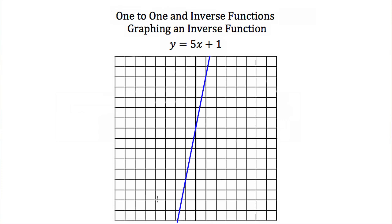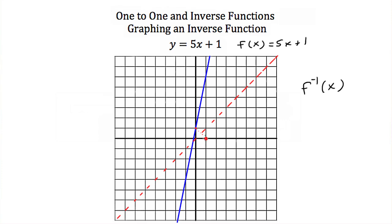If we're given the graph of a function and want to graph its inverse, the inverse can be found by reflecting the original graph across the line y = x. For example, think of y = 5x + 1 as f(x). The y-intercept is at 1, so the point (0, 1) lies on the original function. Reflecting (0, 1) across y = x gives the point (1, 0), which lies on the inverse function.